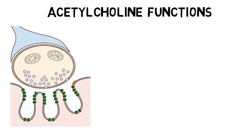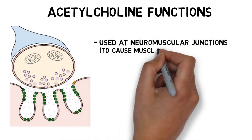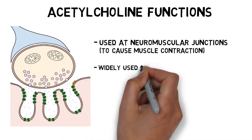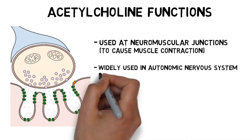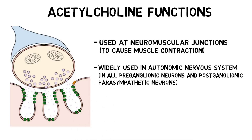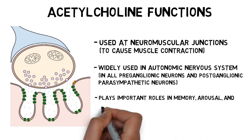Acetylcholine has a variety of functions in the nervous system. It is the main neurotransmitter used at neuromuscular junctions and is responsible for muscle contraction. It is also widely used in the autonomic nervous system. Its functions in the brain are still not fully understood, but it does appear to play important roles in memory, arousal, and attention.